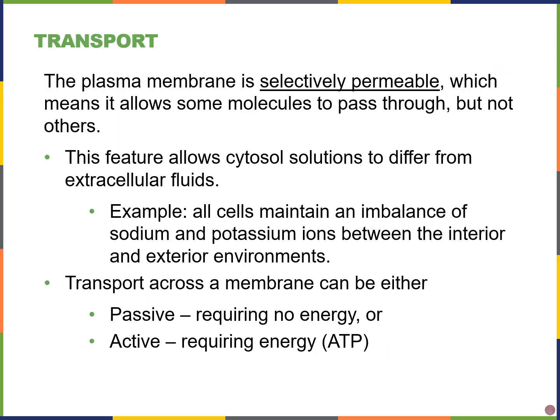Because of the composition of the plasma membrane — mainly due to the phospholipids but also in part due to the proteins — the plasma membrane is selectively permeable. Most things cannot pass, but some molecules can. This allows the cytosol, the inside of the cell, to differ from the extracellular environment. For example, the concentration of sodium and potassium ions are different inside and outside of the cell.